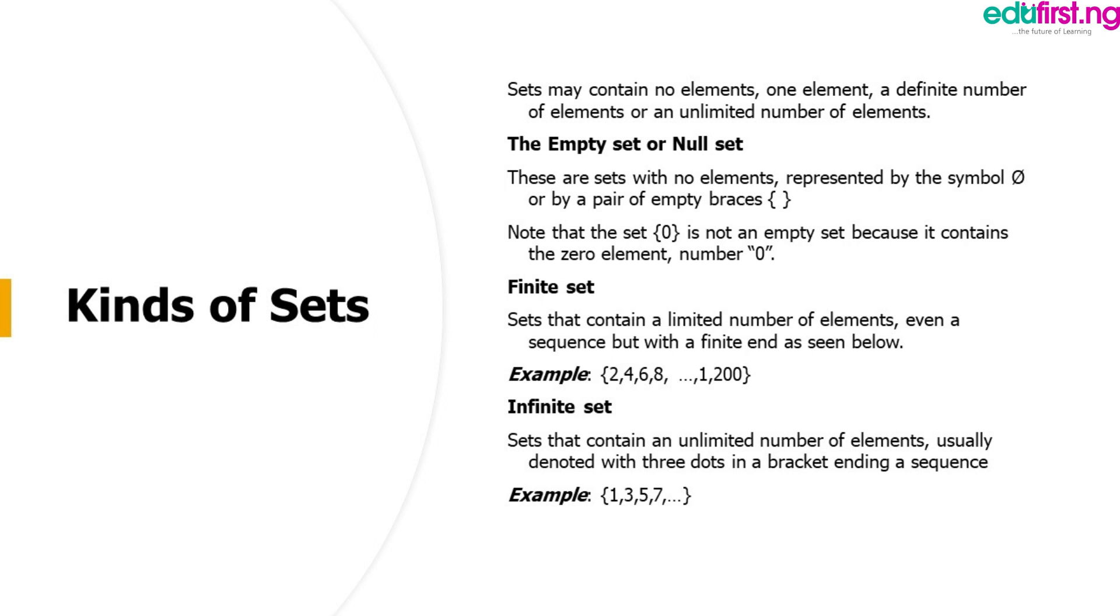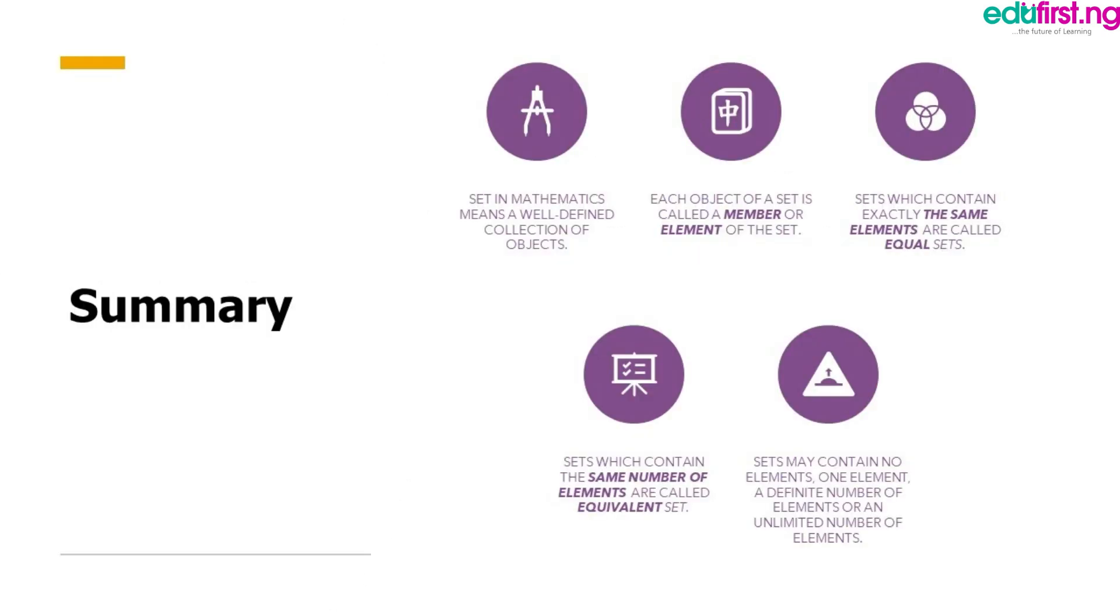In summary, sets in mathematics means a well-defined collection of objects. Each object of a set is called the member or element of the set. Sets which contain exactly the same elements are called equal sets. Sets which contain the same number of elements are called equivalent sets. Sets may contain no elements, one element, a definite number of elements or an unlimited number of elements.